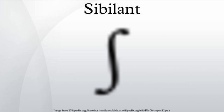Examples of sibilance are the consonants at the beginning of the English words sip, zip, ship, chip, and jump, and the second consonant in vision. The symbols in the International Phonetic Alphabet used to denote the sibilant sounds in these words are, respectively: